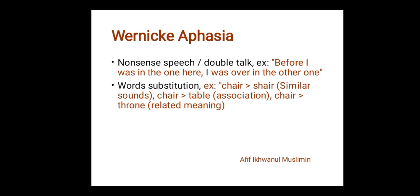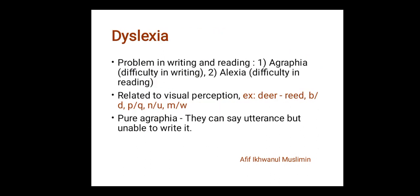On the other hand, someone with comprehension difficulties may remember that 'chair' is associated with 'table,' so when they want to say 'chair' they will say 'table' instead. Similarly, since 'chair' is related in meaning to 'throne,' they might say 'throne' in their language production rather than 'chair,' because their input is not comprehensive.